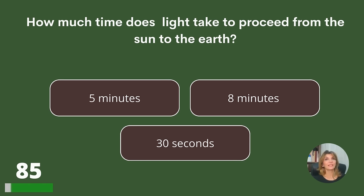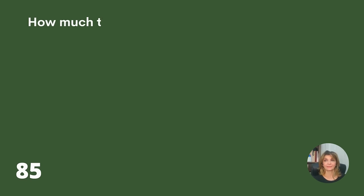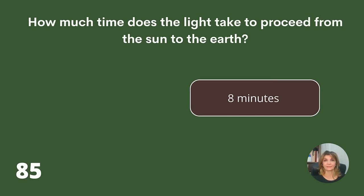How much time does light take to travel from the sun to the Earth? 5 minutes, 8 minutes, or 30 seconds? Answer: 8 minutes.